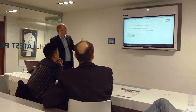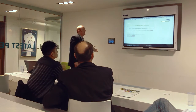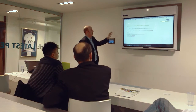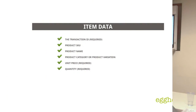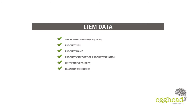You also get item data which is sent — here's the SKU, the product name, the category or product variation, unit price and quantity. With all this data being sent to Google Analytics, it's invaluable because you've got all that information about each transaction, so you can really understand individual aspects of the site and what's happening within the analytics.